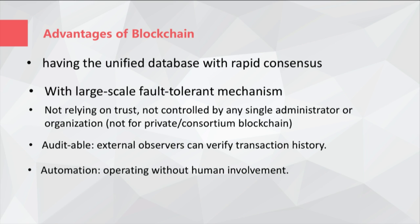Blockchain does not require trust and is not controlled by any single administrator or organization, except for private chain and consortium chain. So it is able to be audited — external observers can verify the history of transactions. It can operate automatically without any human involvement.